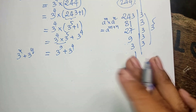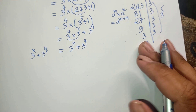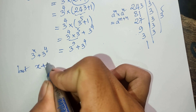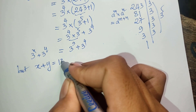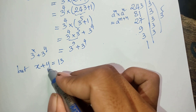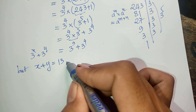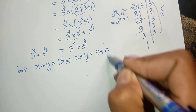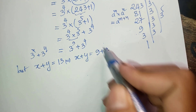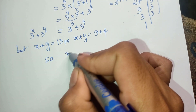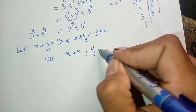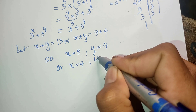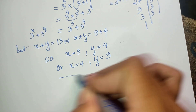This equals 3 to the power h plus 3 to the power y. So we know h plus y equals 9 plus 4 equals 13. We can write h plus y as 9 plus 4, so h equals 9 and y equals 4, or h equals 4 and y equals 9. That is our solution.